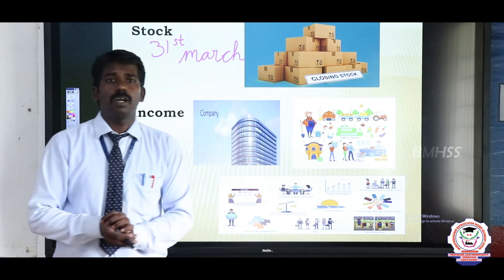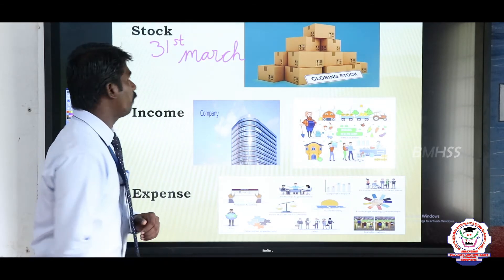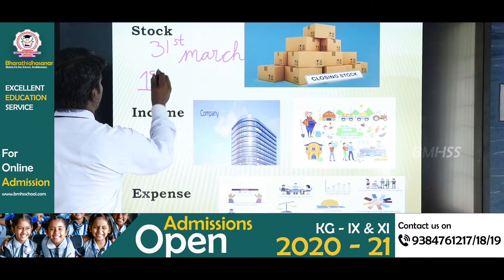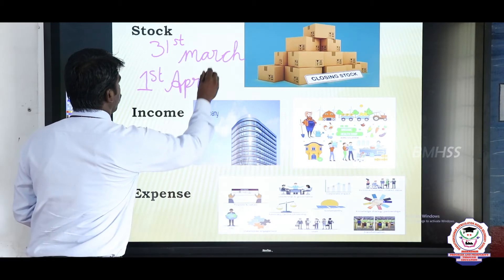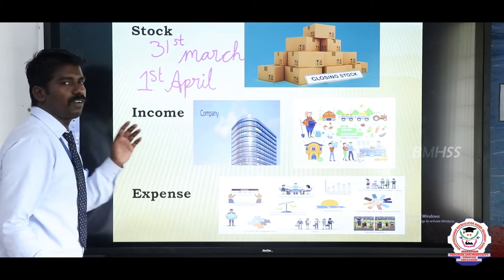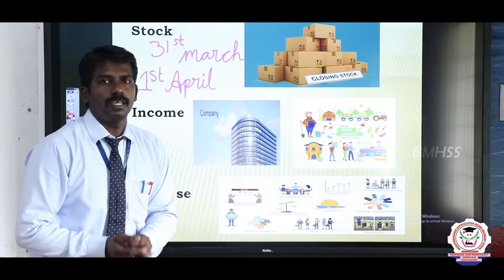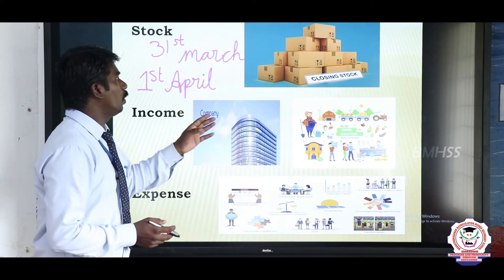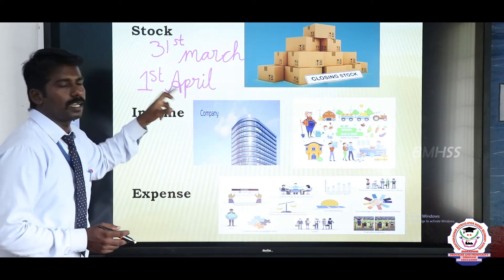The closing stock of one year is the opening stock of the next year. The opening date of the accounting year is 1st April. So, 1st April of every year is called the opening of the year. The closing stock of the last year is called the opening stock of the current year — this is the difference between closing stock and opening stock.